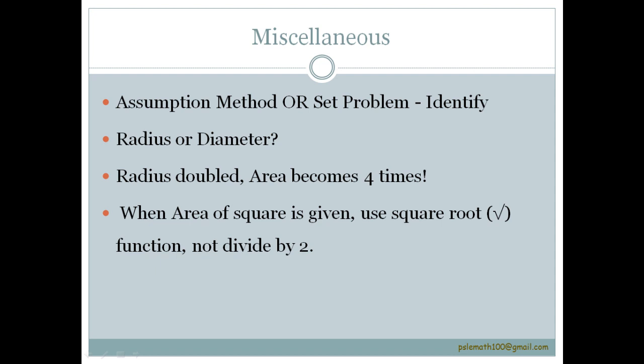For paper 1, learn the simple square numbers until 144. 12 times 12 is 144. 11 times 11 is 121. 8 times 8 is 64. So when the area is given, you know one of the sides of the square.